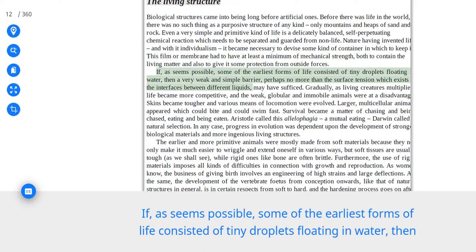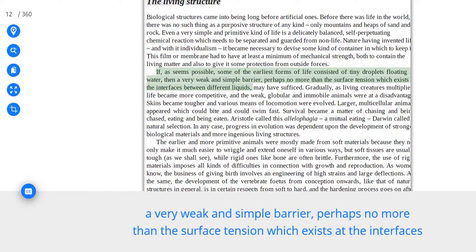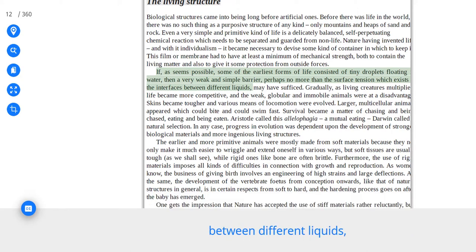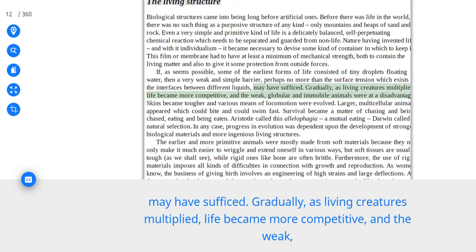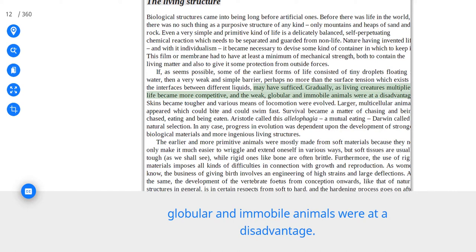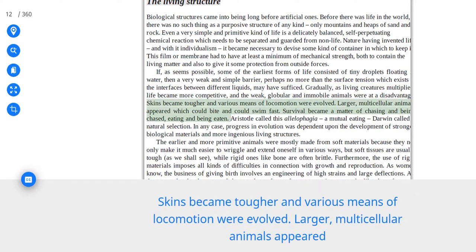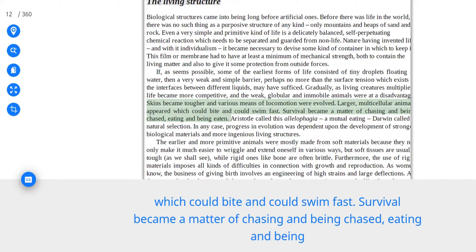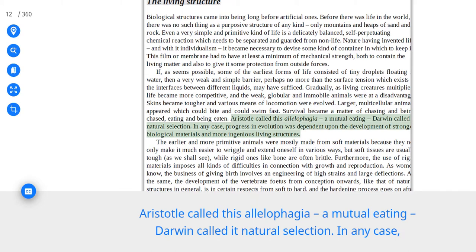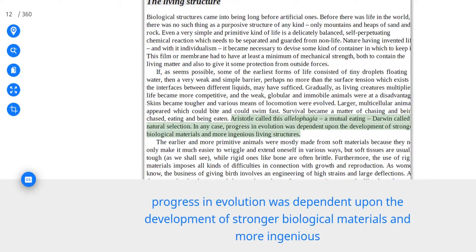If, as seems possible, some of the earliest forms of life consisted of tiny droplets floating in water, then a very weak and simple barrier, perhaps no more than the surface tension which exists at the interfaces between different liquids, may have sufficed. Gradually, as living creatures multiplied, life became more competitive, and the weak, globular, and immobile animals were at a disadvantage. Skins became tougher and various means of locomotion were evolved. Larger, multicellular animals appeared which could bite and could swim fast. Survival became a matter of chasing and being chased, eating, and being eaten. Aristotle called this allelophagia, a mutual eating. Darwin called it natural selection.